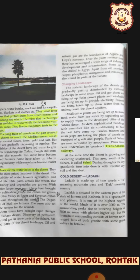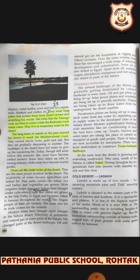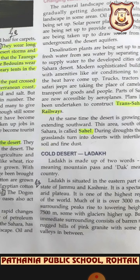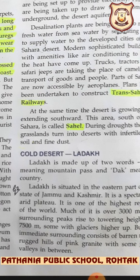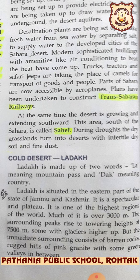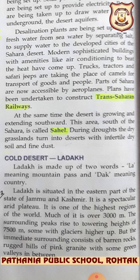Ladakh is made up of two words: 'La' meaning mountain pass and 'Dak' meaning country. Ladakh is situated in the eastern part of Jammu and Kashmir. It is a spectacular arid plateau or dry region, and it is one of the highest regions of the world — much of it is over 3000 meters.